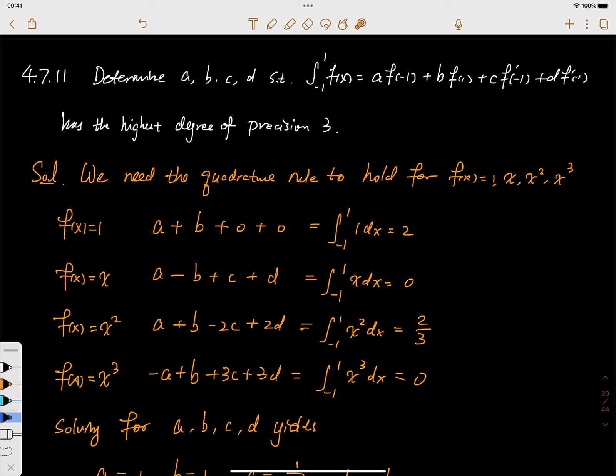The problem 4.7.11: determine the four unknowns a, b, c, and d as the coefficients for this quadrature rule so they can reach the highest degree of precision as three. Again, this is because we have four unknowns to determine.